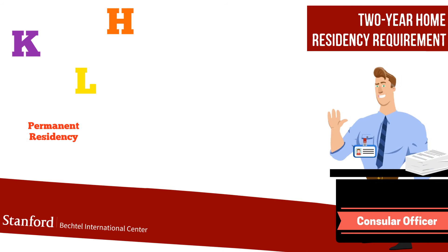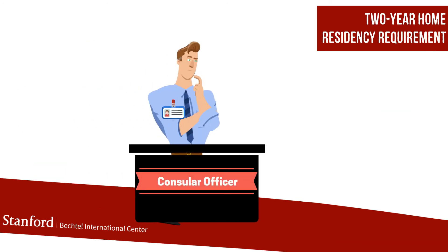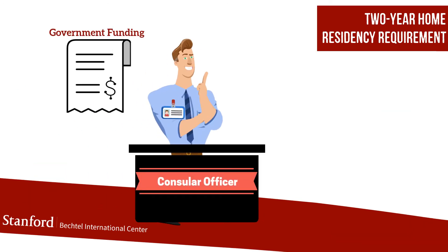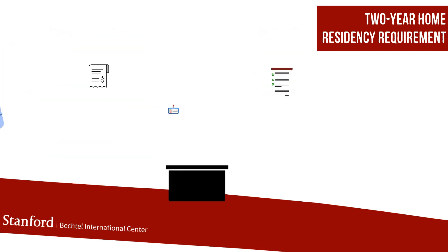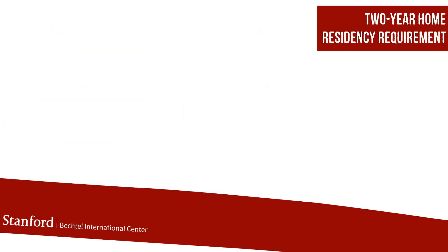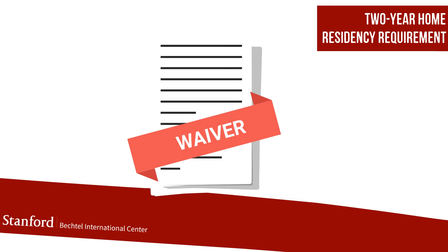A consular officer at the time of visa issuance decides whether someone is subject to the requirement. The decision is based on two factors: government funding and/or the skills list, which is a list of agreed upon skills lacking in a visitor's home country. A visitor can seek a waiver of the requirement. Bechtel does not advise or assist with waivers.